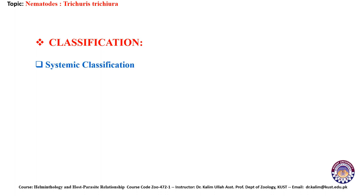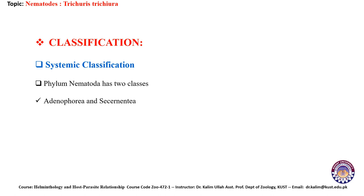Classification. Let's talk about the systematic classification. Phylum Nematoda has two classes: Adenophora and Secernentata, which differ in many ways. These differences between the two classes are given in Table 12.1, which we will discuss in the coming slides.